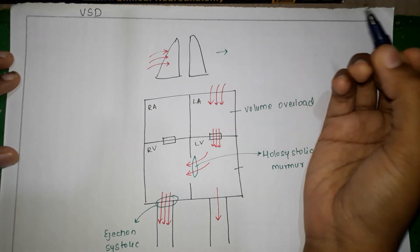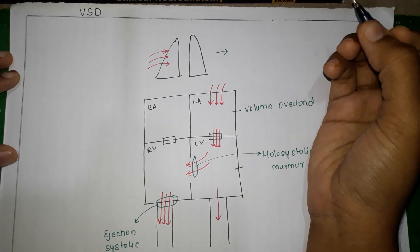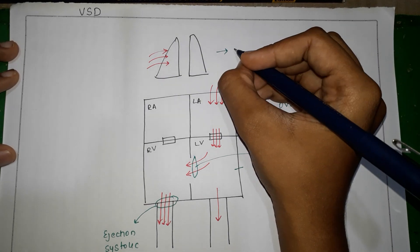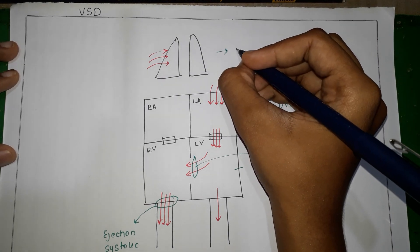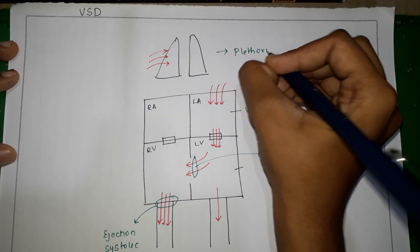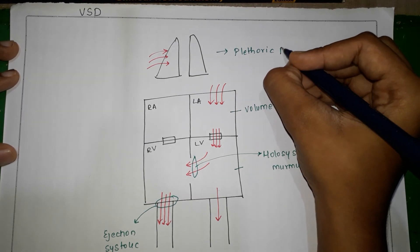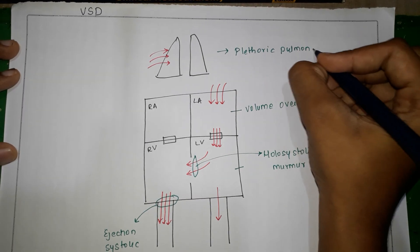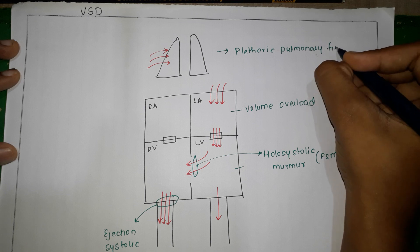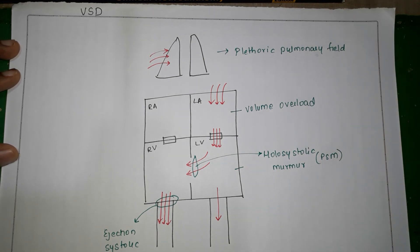Because there is increased pulmonary blood flow to the lungs, on a chest X-ray you will find prominent pulmonary vasculature. This finding is called a plethoric pulmonary field, which basically indicates increased pulmonary blood flow.